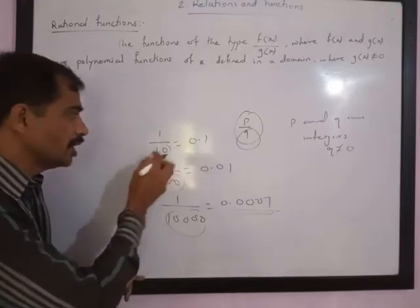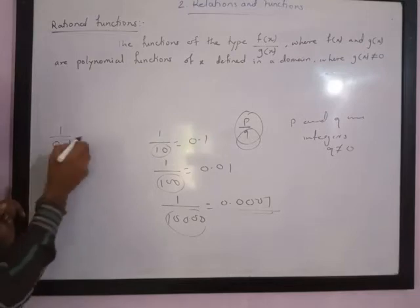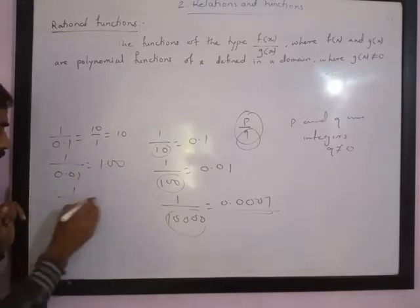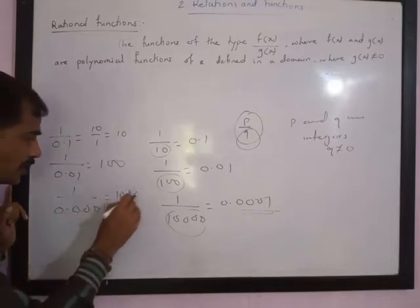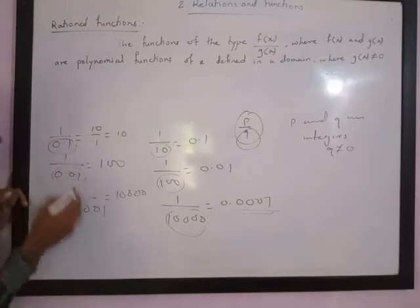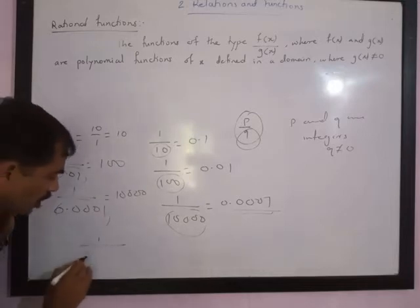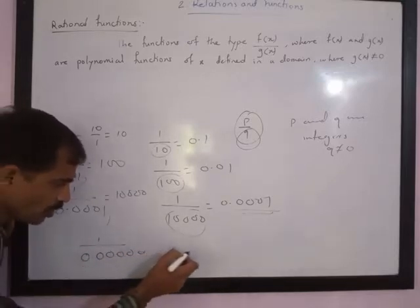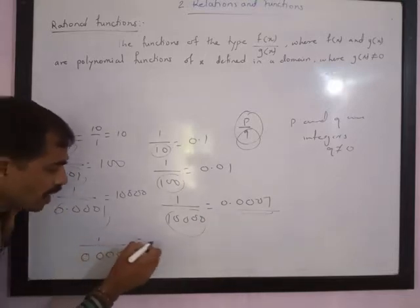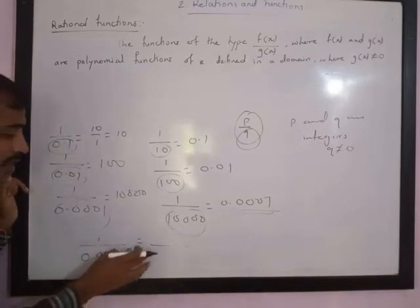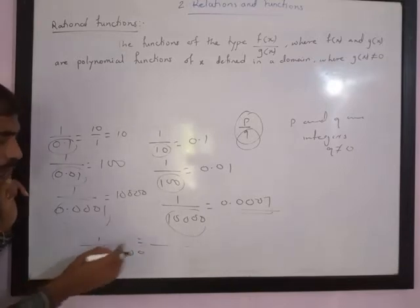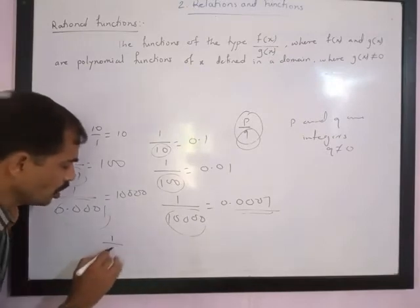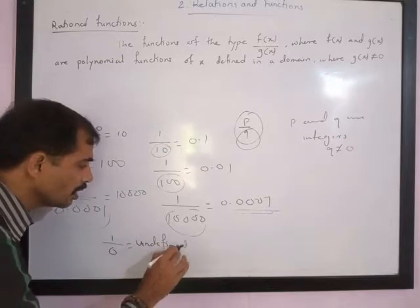If we decrease the denominator, let us see what happens. 1 upon 0.1 gives 10; 1 upon 0.01 gives 100; 1 upon 0.001 gives 1000. If the denominator goes on decreasing, the value goes on increasing. If the denominator is a very small number like 0.00001, the value becomes very large. If the denominator becomes exactly 0, the value is so large it cannot be written — it is undefined. So 1 upon 0 is undefined.